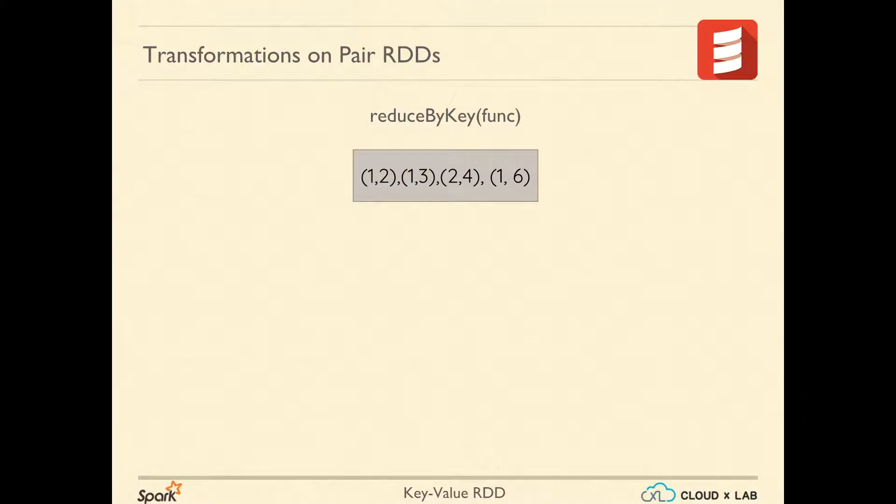Let's understand how it worked. It first grouped the data by the key, which is the first value of the tuple, and then reduced the list of values for each key.